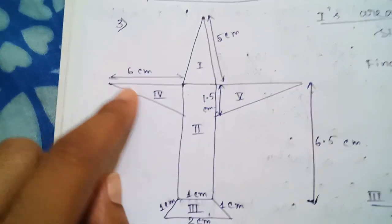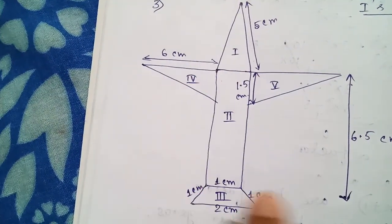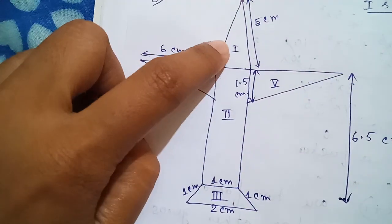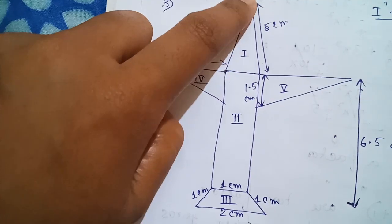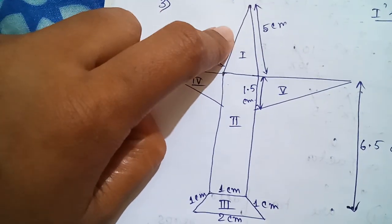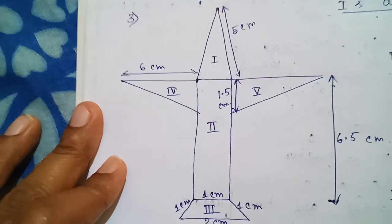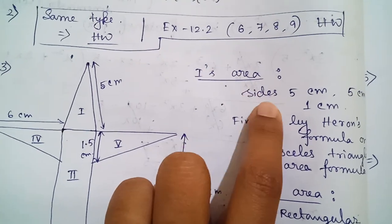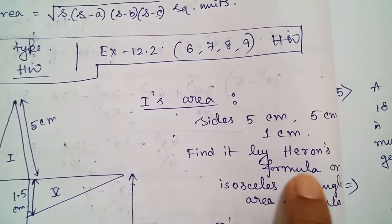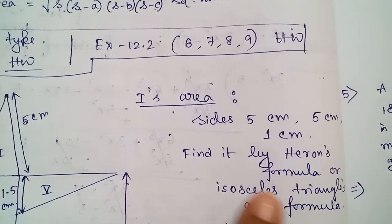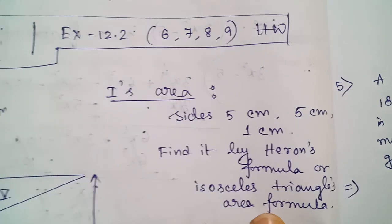Now question number three — the figure looks like an aeroplane. I have drawn the figure without writing the question. The first part is an isosceles triangle with each of the two equal sides being 5 centimeters and the base 1 centimeter. Find its area by Heron's formula or the isosceles triangle's area formula — you can use either. If you've forgotten the isosceles formula, just open your Class 7 book.